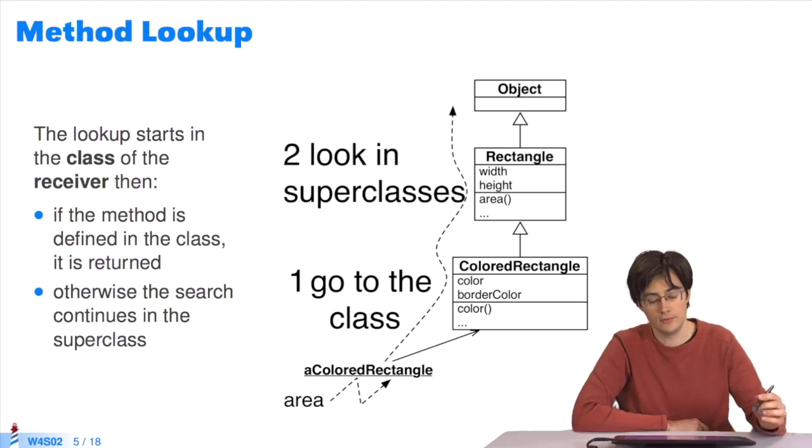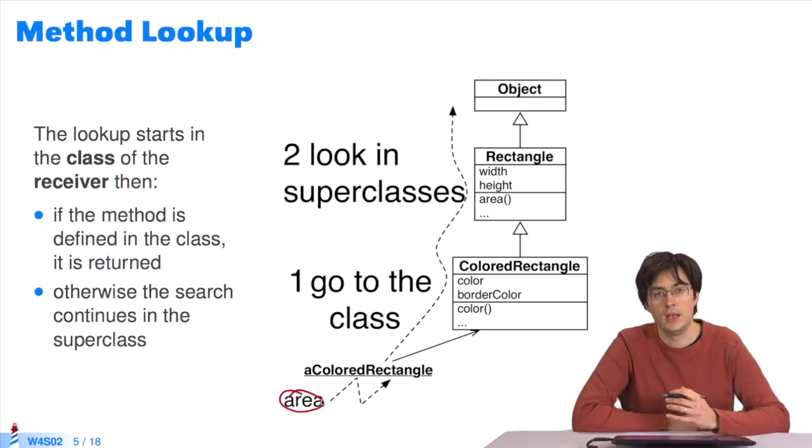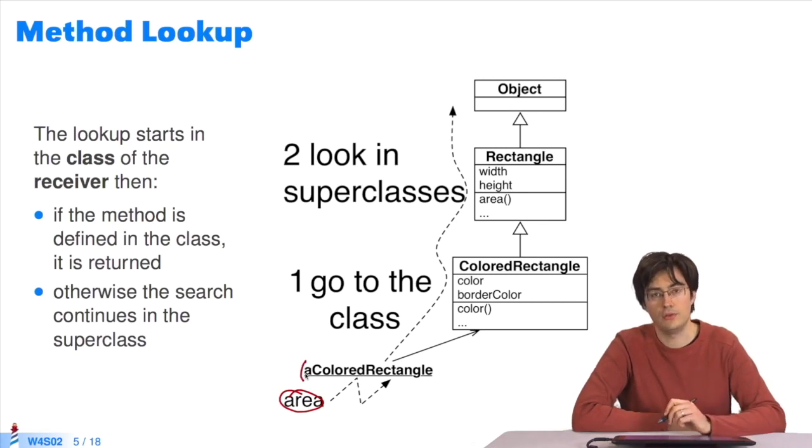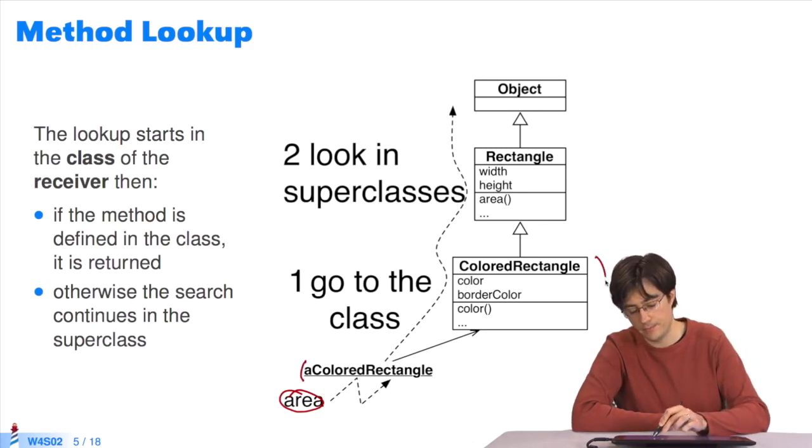If you send the area message to the acolored rectangle object, the first thing the lookup algorithm will do is search for the class of the receiver. The receiver of the message area is acolored rectangle. The lookup algorithm starts searching for a method in the object's class, colored rectangle.